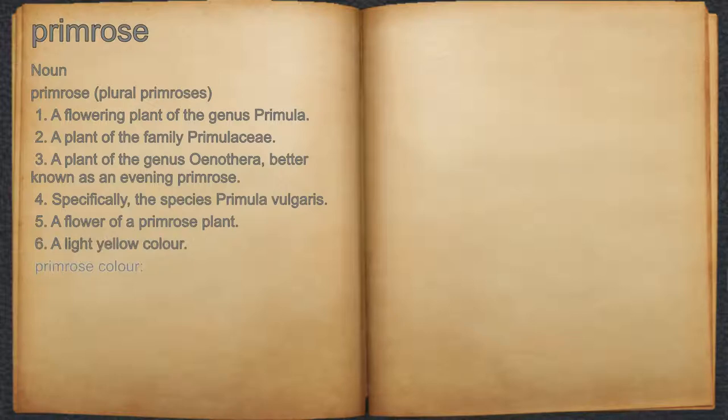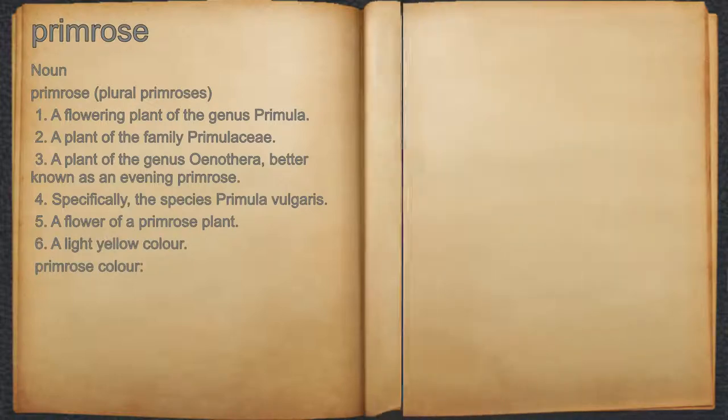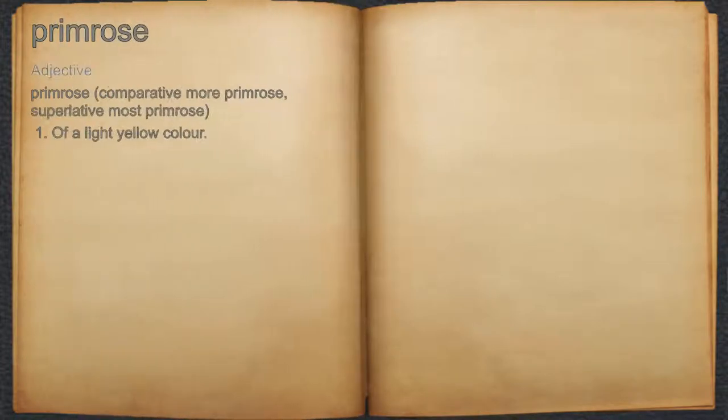For example, primrose color. Primrose, adjective. 1. A light yellow color.